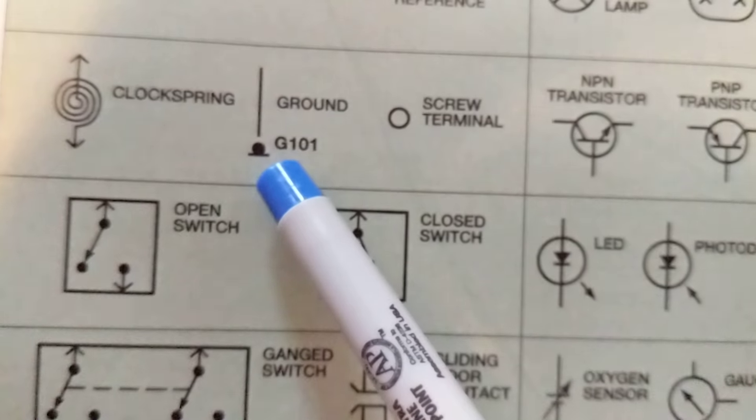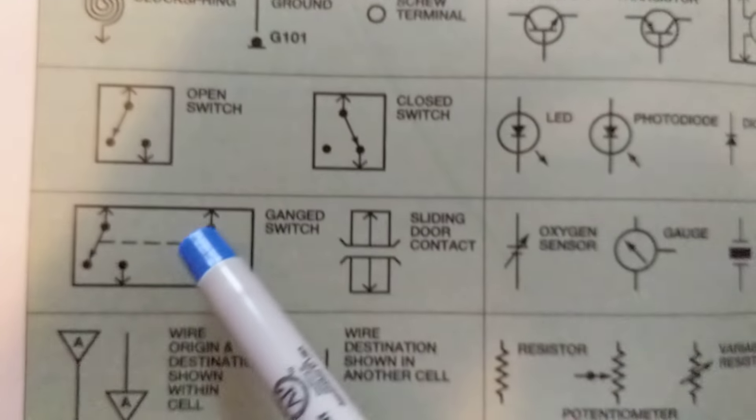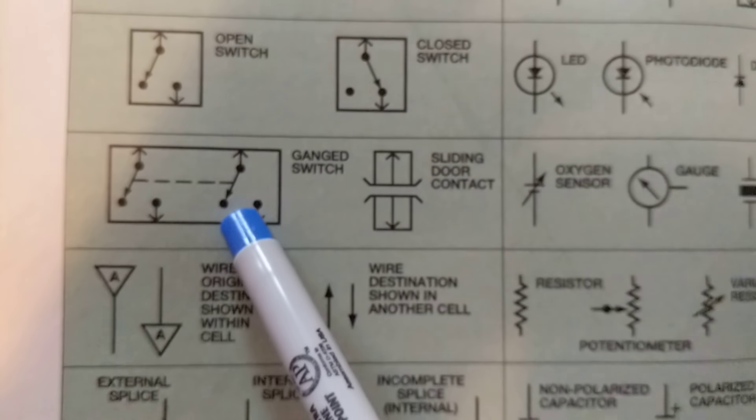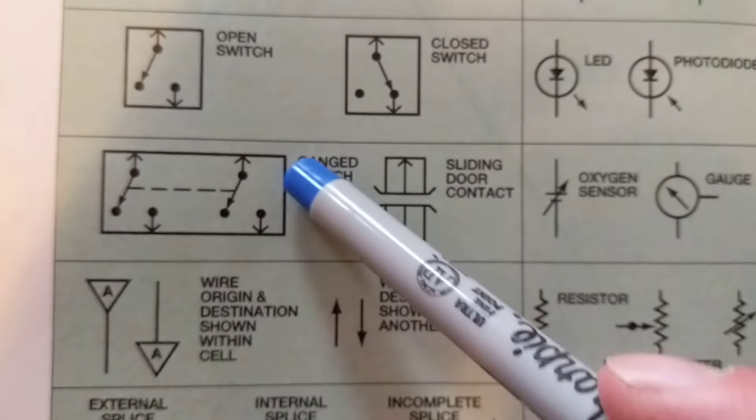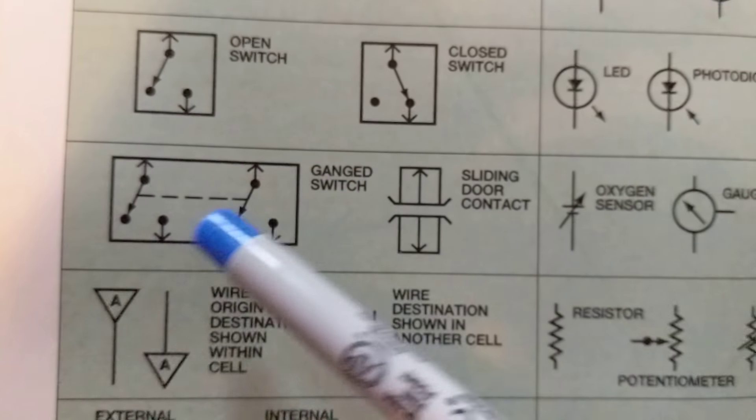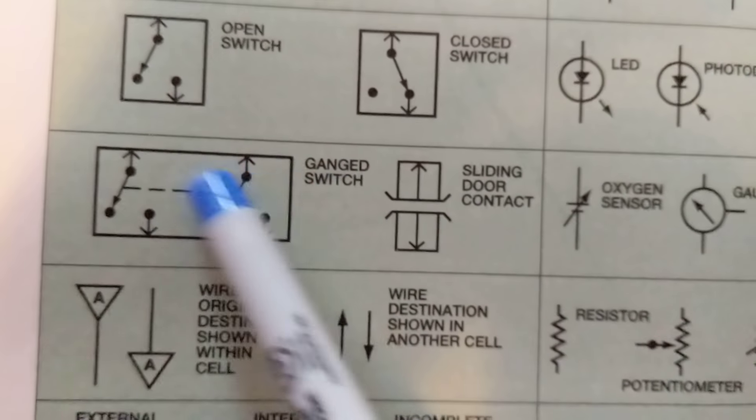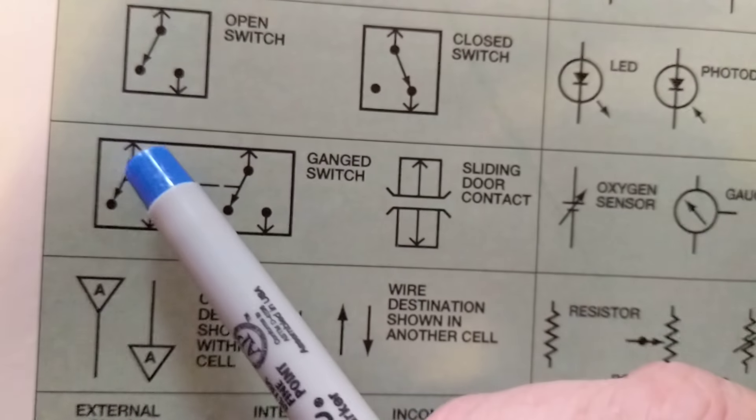And ground over here, G101 denotes a ground. Gang switch, and I'm going to show you an example of that. When one switch goes this way, the other switch also goes this way. I call these siamese twins, when one goes the other one goes.